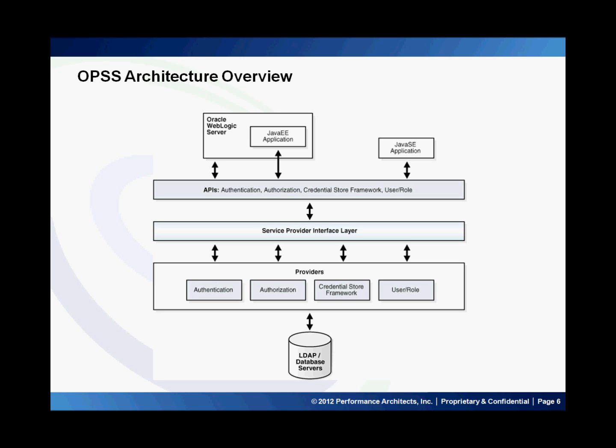This is the OPSS architecture overview. This picture depicts various security component layers. The uppermost layer consists of Oracle WebLogic Server and Java applications running on the server. Below is the API layer, consisting of Authentication, Authorization, and User and Role APIs, followed by the service provider instance, and then the list of providers.